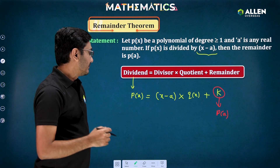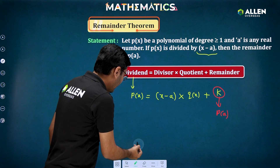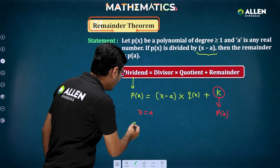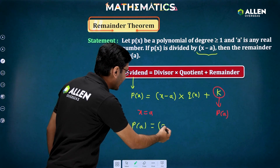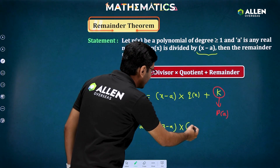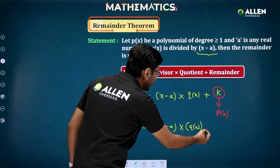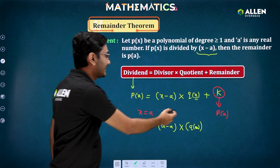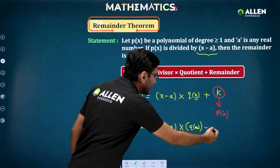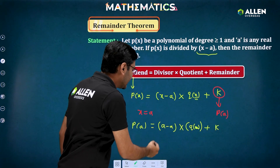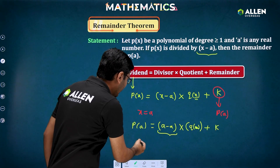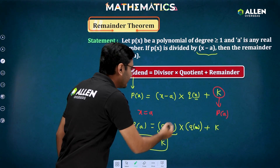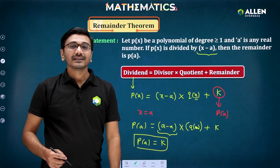Why is it so? Let's discuss this. When you put x equal to a in the equation p(x) = (x minus a)·q(x) + k, you get p(a) on the left side, and on the right side you get (a minus a)·q(a) plus k. Since (a minus a) is 0, you are left with p(a) equal to k. So the remainder k is just p(a).